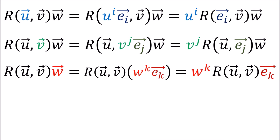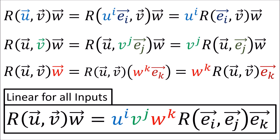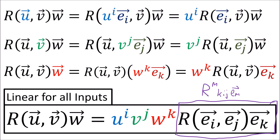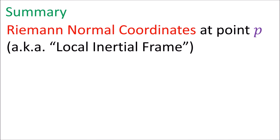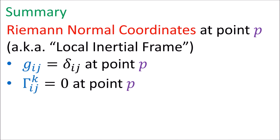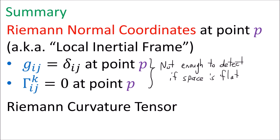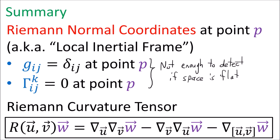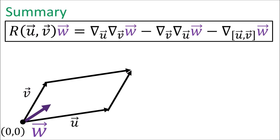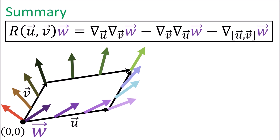We've proven that the Riemann curvature tensor is linear in all of its inputs, and that means to compute the result for any combination of input vectors, we only need to know how it acts on the basis vectors — which ends up being the components of the Riemann tensor, covered in the next video. To summarize: we learned about the Riemann normal coordinates, or local inertial frame, a coordinate system at a point p where the metric tensor is the identity matrix and all connection coefficients are zero. Because we can always find such a coordinate system at a given point, zero connection coefficients are not enough to detect flatness. Instead we use the Riemann curvature tensor given by this formula, representing parallel transport of w around a parallelogram formed by u and v. The output is the difference between the original w vector and its parallel transported version. If this difference is zero, the space is flat; if non-zero, the space is curved.